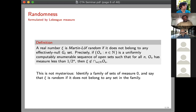It's a notion of randomness identifying a measure-zero set and saying a real is random if it avoids a countable collection of measure-zero sets. If you expand the collection of null sets the real is supposed to avoid, you get stronger notions of randomness; if you avoid fewer, you get weaker notions. A random real is one that exhibits the almost-everywhere behavior of the continuum.